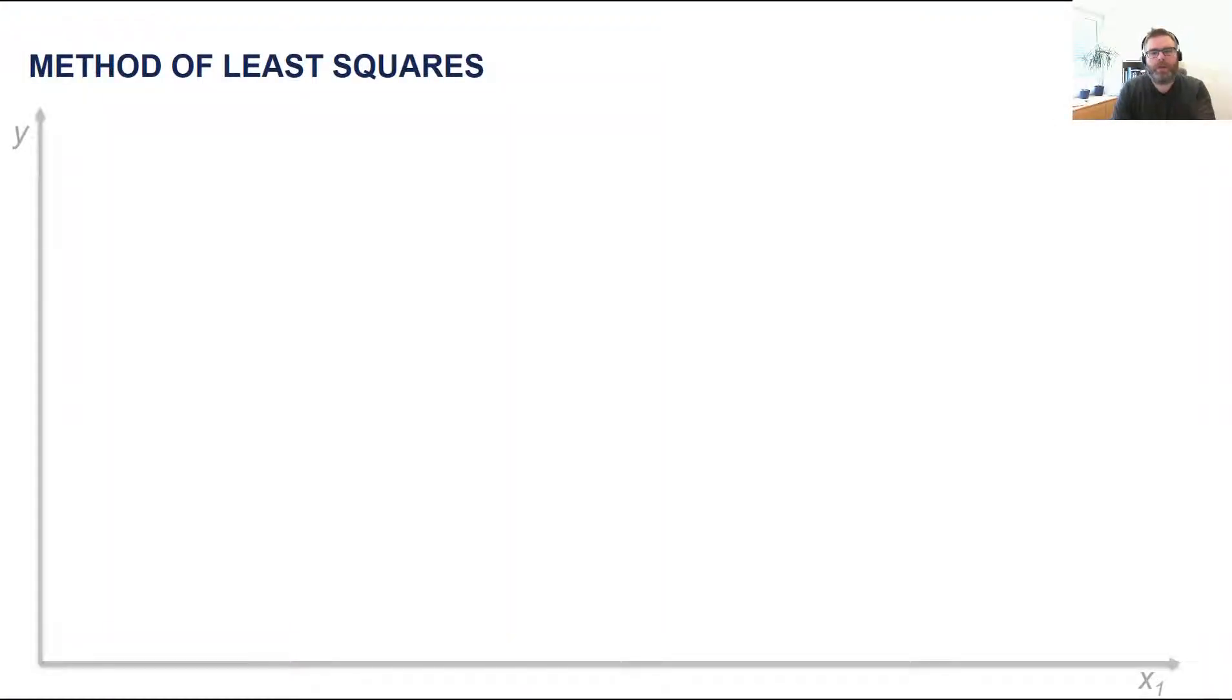In this animation I'll try to explain how the method of least squares work with a simple example. We have the response Y here and we have a relationship potentially with one predictor or one X variable X1. First assume that we have the following observations on X1 and Y. For this recorded value of X1 we have the following response, and so on.